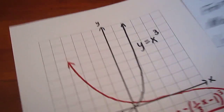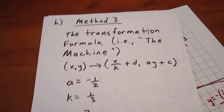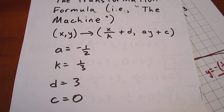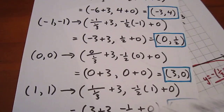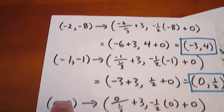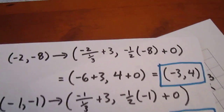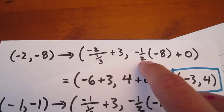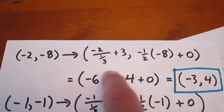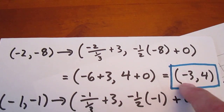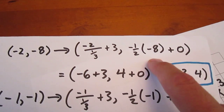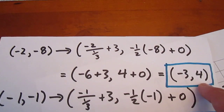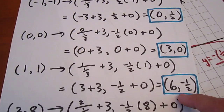The last method is method three — the formula, or the machine. The machine says x, y will always map onto x over k plus d, and ay plus c. With a equals negative one-half, k equals one-third, d equals three, and c equals zero, we take each of our five points on the parent function and map them through the machine. For example, x equals negative two maps onto negative two over one-third plus three equals negative three; y equals negative eight maps onto negative one-half times negative eight plus zero equals four. So negative two negative eight maps onto negative three four. We determine each image point in a similar manner.